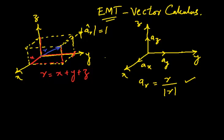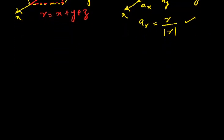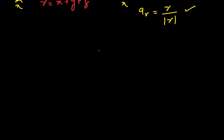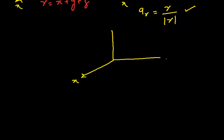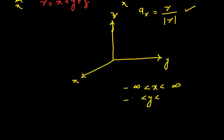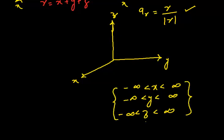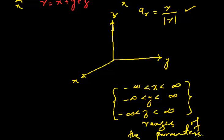Now I would like to go to a few other concepts regarding vector calculus. Let me draw the same coordinate system with the x, y, and z axes — we are discussing the rectangular coordinate system. In this system we have three parameters: x is from minus infinity to infinity, y is from minus infinity to infinity, and likewise z is from minus infinity to infinity.